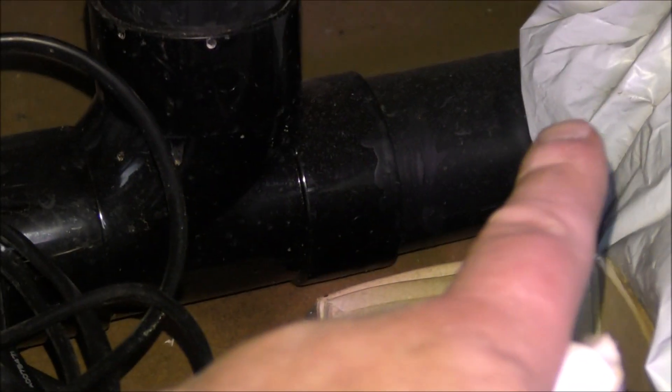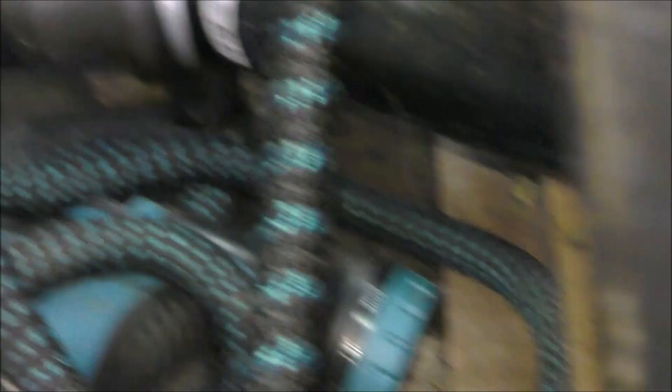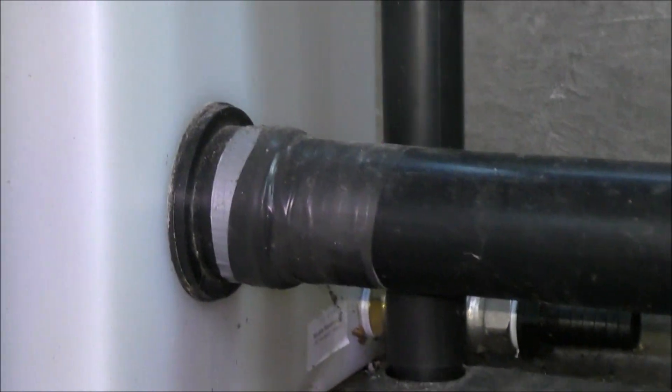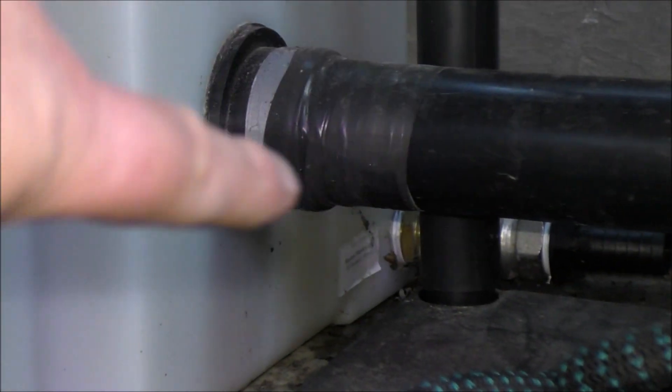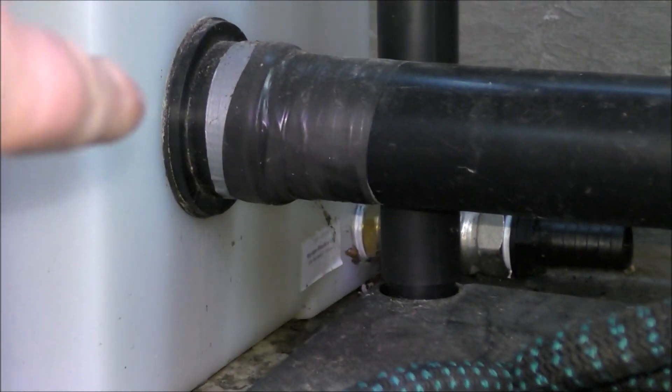Just go underneath there. We go, so that's feeding down from one of the towers. We've got the other tower feed coming in to a T junction, and then that goes back to the tank.